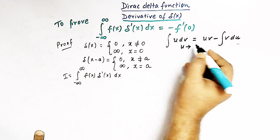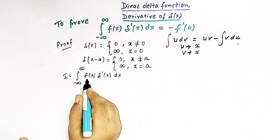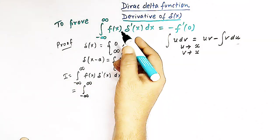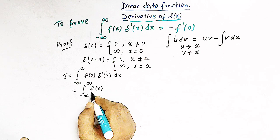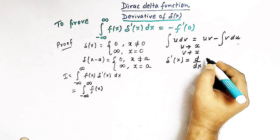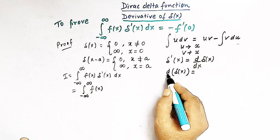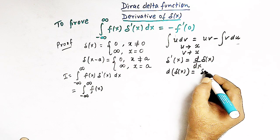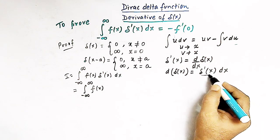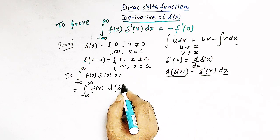The formula for integration by parts is: integral of U dv equals U times v minus the integral of v du, where u and v are both functions of x. This integral can be written as the integral from minus infinity to infinity of f(x) times d(delta(x)), since delta prime of x dx can be written as d of delta(x).